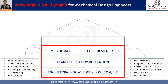Apart from manufacturing domains, core design skills are very necessary to design and deliver a functionally working product. These include the NPD process, engineering drawings, GD&T as per ISO and ASME standards, tolerance stack-up analysis, design for manufacturing, design for assembly, and many more skills. I have created a separate video to explain all these skills and their significance — the link is in the comment section and at the end of this video.